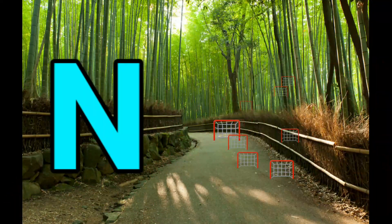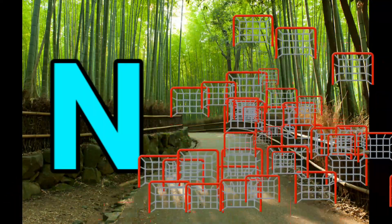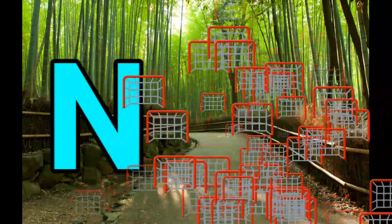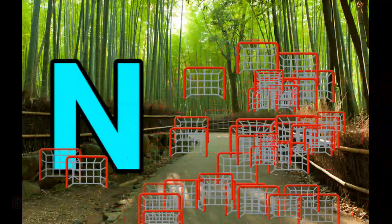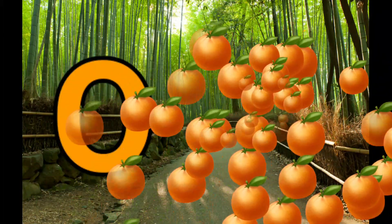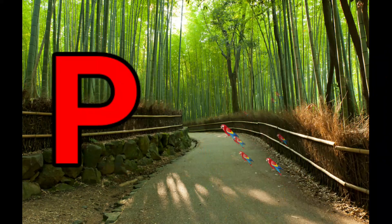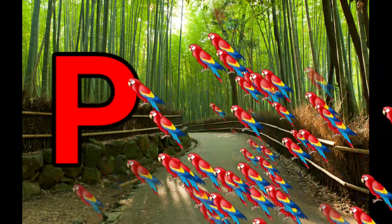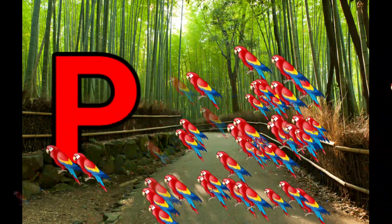N is for Net. N-N-Net. O is for Orange. O-O-Orange. P is for Pet. P-P-Pet.